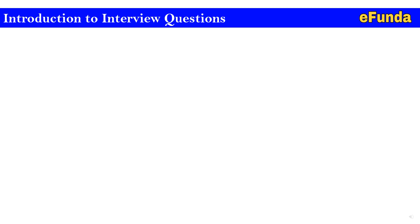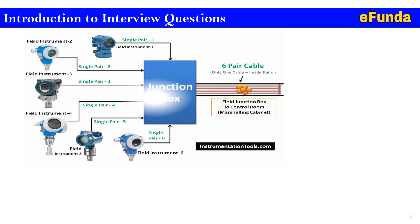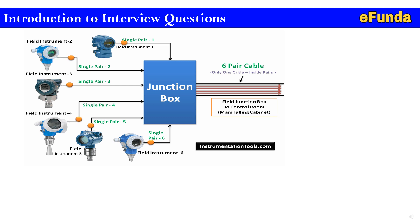Here one can see the interface diagram where all field instruments are connected through various types of pair cables to junction boxes. Further from the junction boxes, multi-pair cables are connected to the control room via marshaling cabinet. This is the general sequence for instrumentation — passing the signal from field to the control room.